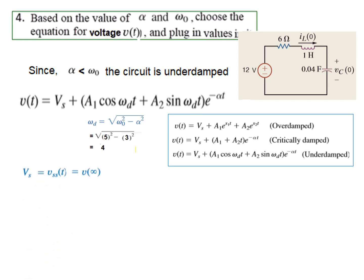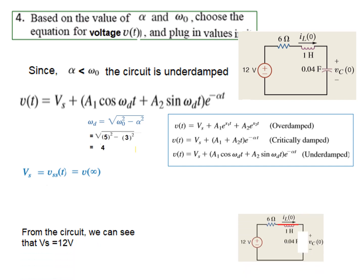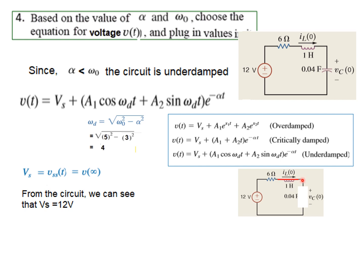V_ss is the voltage at steady state, or voltage at infinity. When the circuit is connected for a long time, the inductor behaves like a short circuit and the capacitor behaves like an open circuit. So whatever the source voltage is will appear across this open circuit — that will be V_ss or Vs. So we can say Vs is 12 volt, because the input is 12 volt, and the capacitor will charge to 12 volt. Now we plug in all the values: Vs is 12, alpha is 3, omega_D is 4. This is our general equation, and now we have to find A1 and A2.